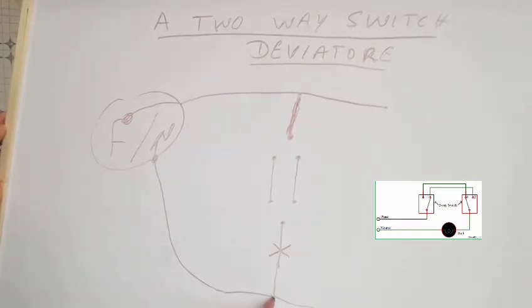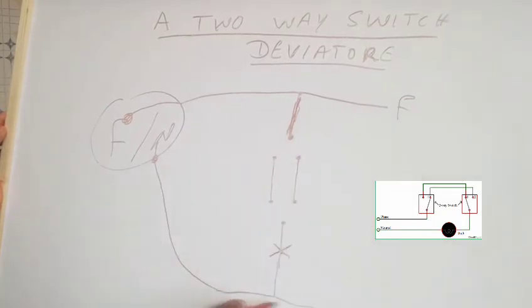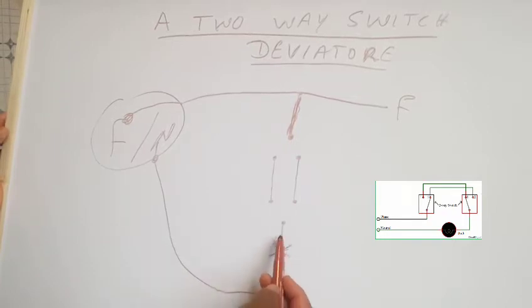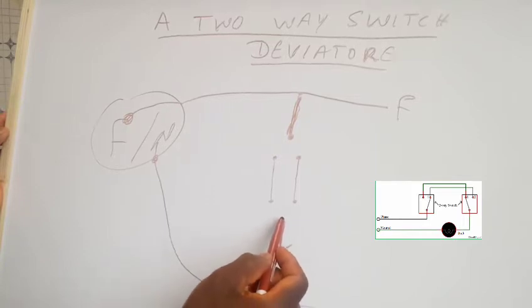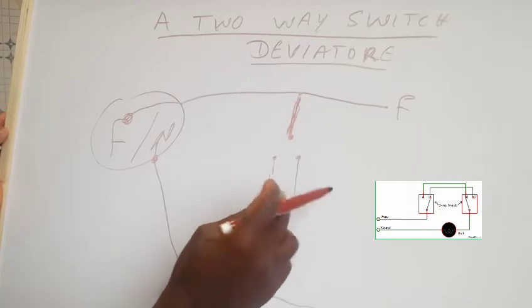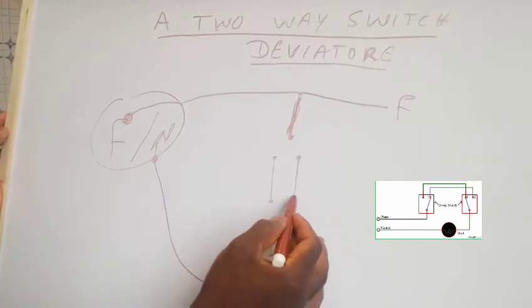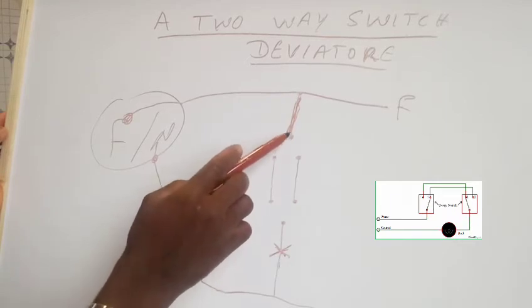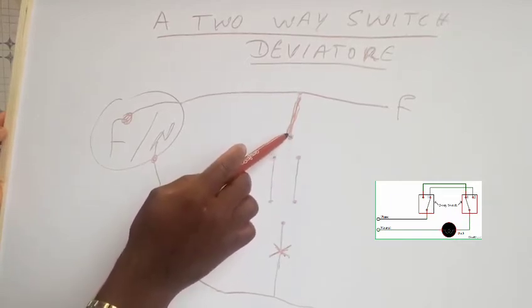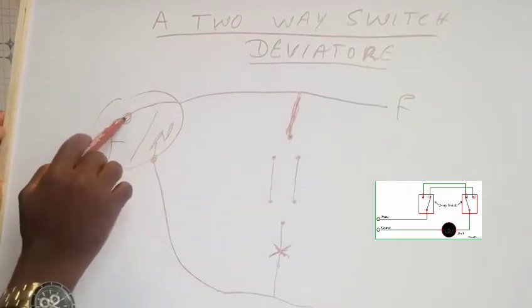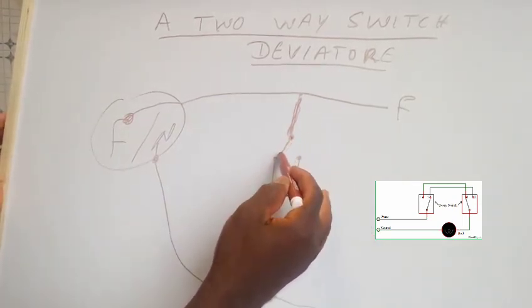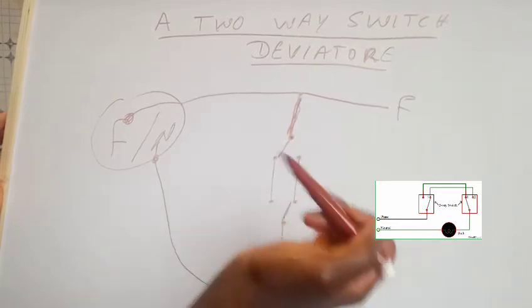So your neutral wire goes directly from the neutral source to the light bulb. From the bulb you have the return wire that goes to the first two-way switch. From the first two-way switch you have the two parallel wires that go to the second two-way switch. Then from the last hole you have your phase wire that goes back to the phase source.